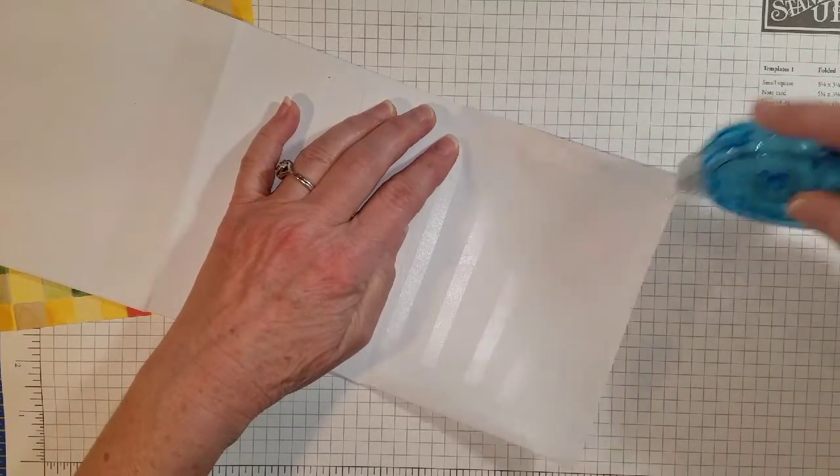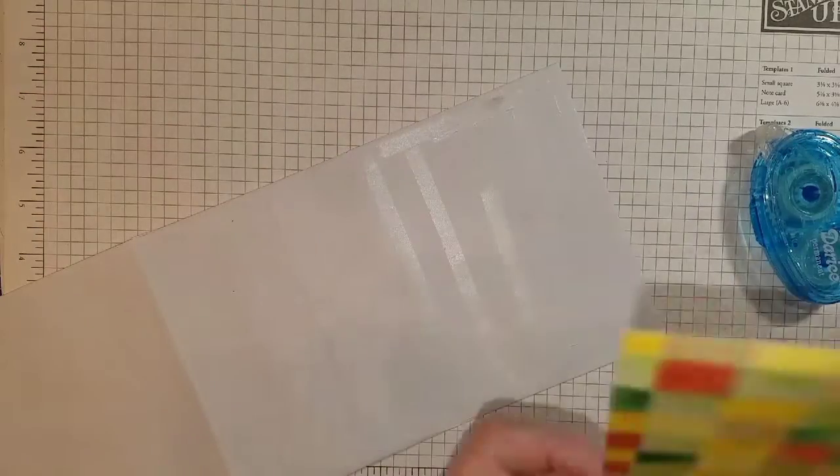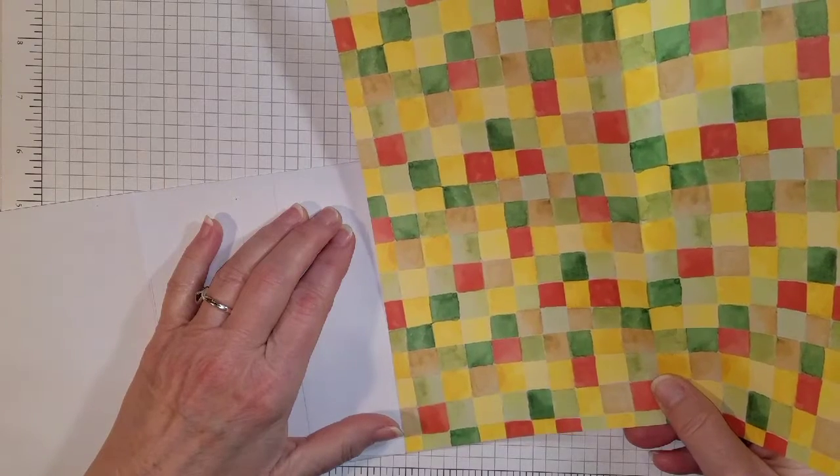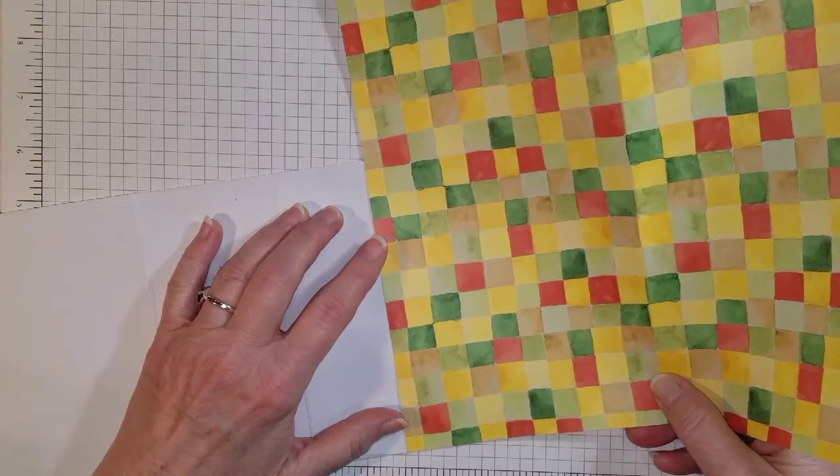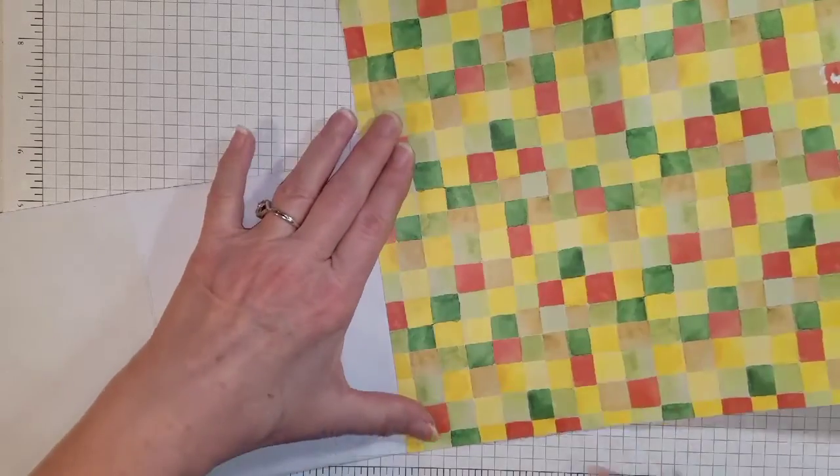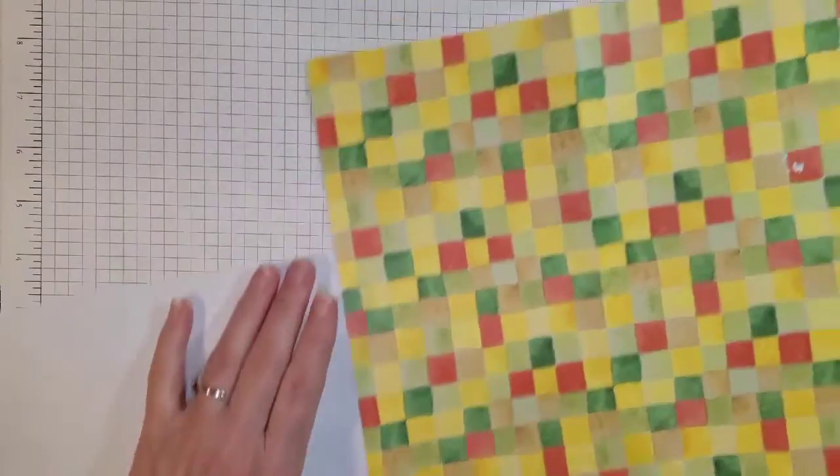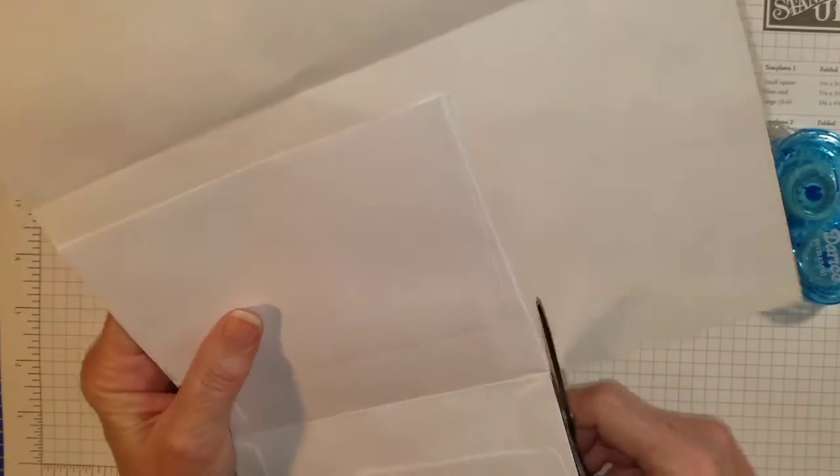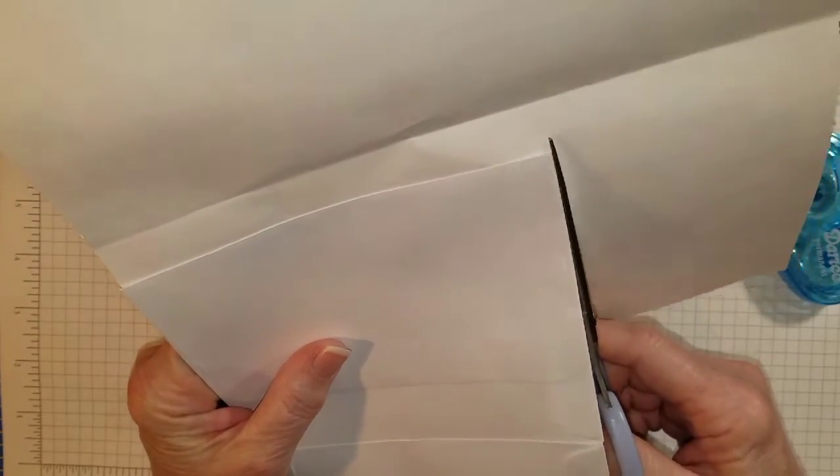Alright, get your glue on there, and then I'm going to just grab this paper and put it on as straight as I can. Just like that, and now I'm just going to take my scissors and carefully cut along the edge of the envelope.